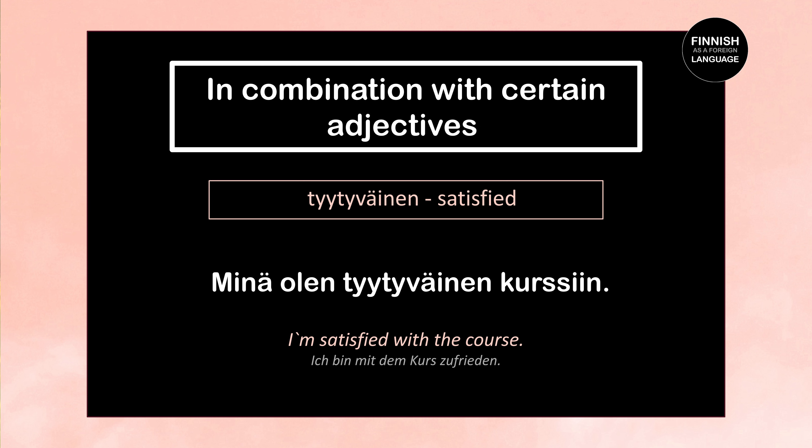We also use the illative in combination with certain adjectives. For example, tyytyväinen means satisfied. So: Minä olen tyytyväinen kurssiin — I'm satisfied with the course. Minä olen means I am, tyytyväinen means satisfied, and kurssiin is the illative of kurssi. When using the adjective tyytyväinen and expressing what we are satisfied with, that noun must stand in the illative case.